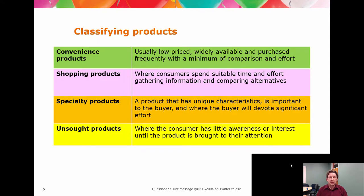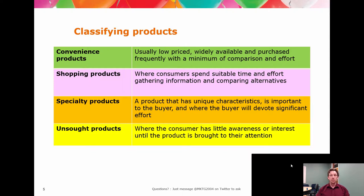In terms of products, the textbook has a series of classifications and classification frameworks. Each one brings certain value. A convenience product gives you a way of clustering together common products and offerings. Shopping products, specialty products, and unsought products all have certain features, constraints, and advantages.